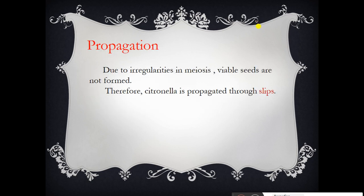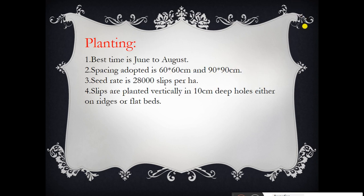Regarding propagation, the seeds of citronella grass are not viable because meiosis irregularities mean seeds are not suitable for germination. For this reason, citronella grass is commercially propagated mainly by slips or rooted slips.